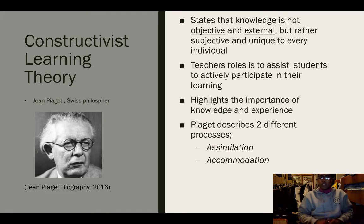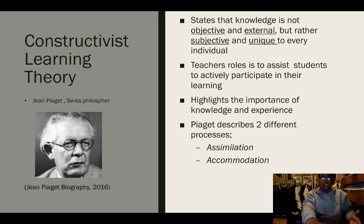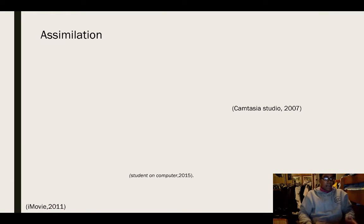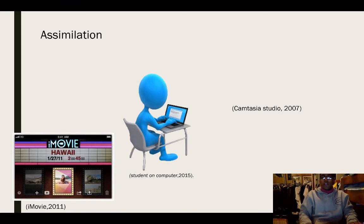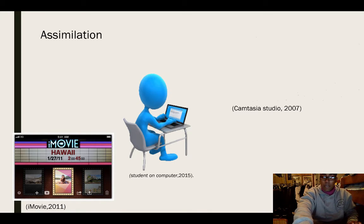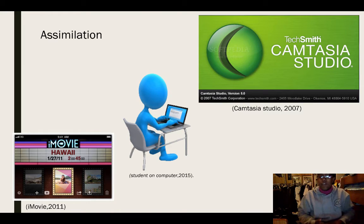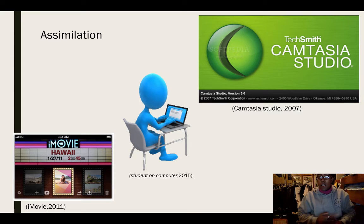Piaget describes two processes: assimilation and accommodation. Assimilation refers to feeding new information to pre-existing knowledge. Through this process, we add information to our existing knowledge base. For example, say I've done some work with iMovie in high school, but now for this assignment I need to use Camtasia. Since they have similar software, I'm able to transfer the knowledge I know about iMovie to Camtasia, but I need to build on it because it's a more advanced software.